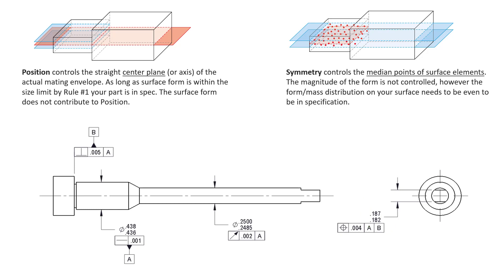Looking over at symmetry, because Alex did bring up the point of symmetry versus position, symmetry controls the median points of surface elements. The magnitude of the form is not controlled; however, the form or mass distribution on your surface needs to be even to be in specification. This is the feature that Alex is questioning — how to locate this, what's the best control for this back to the datum. I would call this a wrench flat.